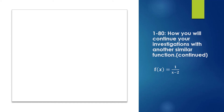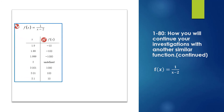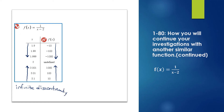Looking more closely at f(x) = 1 / (x − 2), as x approaches 2 from the left, the y-value heads toward negative infinity — same behavior as with x = 7. As x approaches 2 from the right, y heads toward positive infinity. So again, we have infinite discontinuity: a break in the graph.